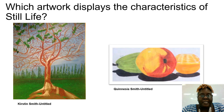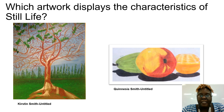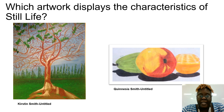Let's take a look at these artworks — one by Kirsten Smith, the other by Quinysius Smith. Which artwork displays the characteristics of still life? Is it Kirsten Smith or is it Quinysius Smith? If you said Quinysius Smith, you are correct. Kirsten Smith's painting actually displays the characteristics of landscape painting.